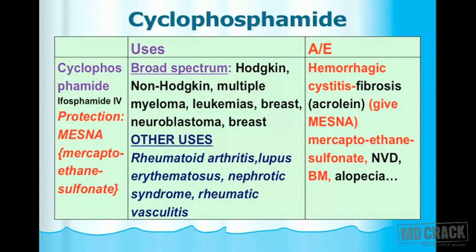The general toxicity of anti-cancer drugs was discussed in a separate session. Rapidly multiplying normal cells of the body are also affected, including bone marrow cells — causing bone marrow suppression — and hair follicle cells — causing alopecia. Mucous membrane cells also multiply rapidly, leading to mucositis, glossitis, stomatitis, nausea, vomiting, and diarrhea as common adverse effects.